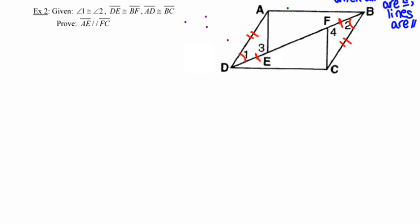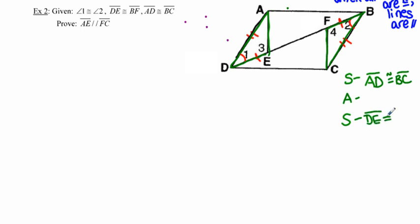From the way I've marked the diagram, the triangles I want to make congruent are triangle ADE and triangle CBF, and I can see I'm going to make them congruent by side-angle-side. My outline: sides AD and BC are congruent, sides DE and BF are congruent, and angles 1 and 2 are congruent — all directly from the given information. So this is going to be a relatively straightforward proof.